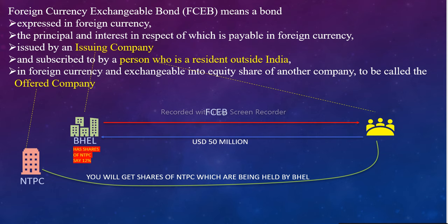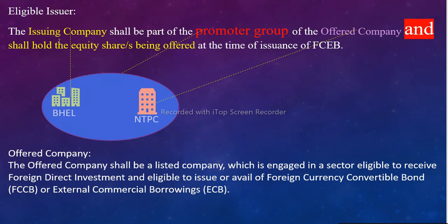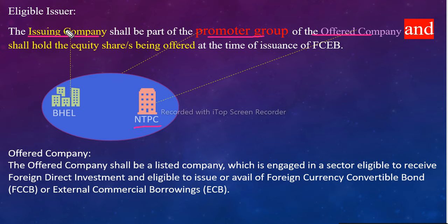Dekho yahan par kya kehna ja raha hai: The issuing company — yani BHEL, jo FCEB issue kar raha hai — shall be part of the promoter group of the offered company. Mere example mein Offered Company thi NTPC. To jo issuing company hai BHEL, aur jo Offered Company hai NTPC, yeh same promoter group ke hone chahiye. Ab promoter group ki definition aapko kahaan milti hai?